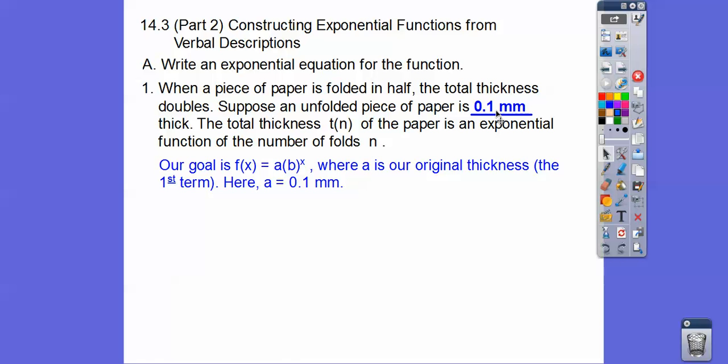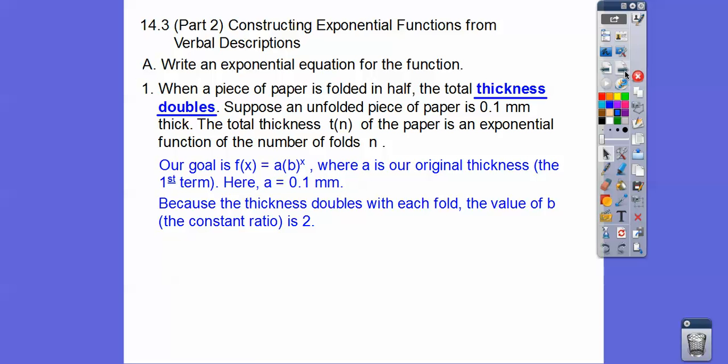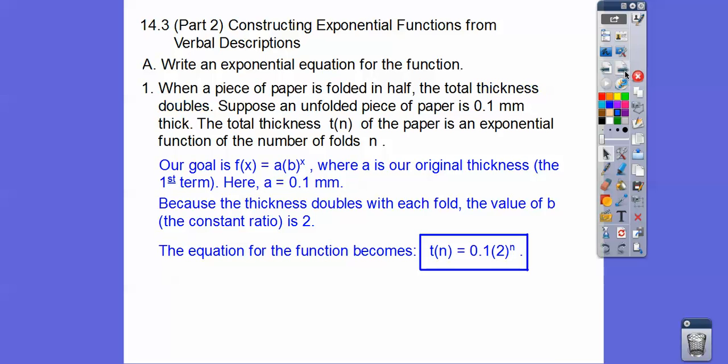And so it doubles after every time. So here's A right here. So we know it's going to be T sub n equals 0.1 times B to the x. And then B is our time, it multiplies. Here it says the thickness doubles. So the value of B, which is going to be 2, because it's times 2 times 2. That's what doubling is. So there's our equation for that function: T sub n equals 0.1 times 2 to the n power.